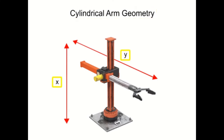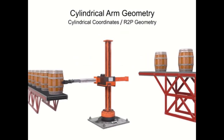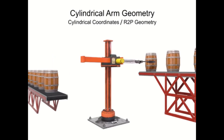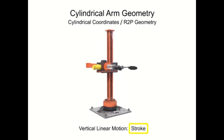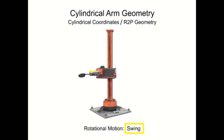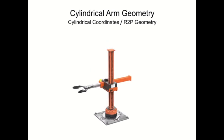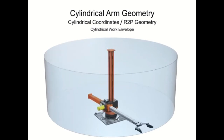The second type is the cylindrical arm geometry. It has two linear motions — x and y — and then a rotational movement which is rotation about the z-axis. The x motion is called the height and the y motion is called the reach. Sometimes it's called R2P — one rotation and two prismatic. The cylindrical robot is excellent for handling and movement because it's very centralized in its center of gravity, very rigid and structurally sound, and requires a very small work area.